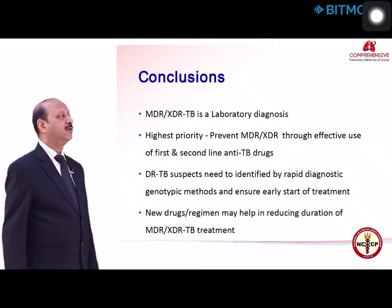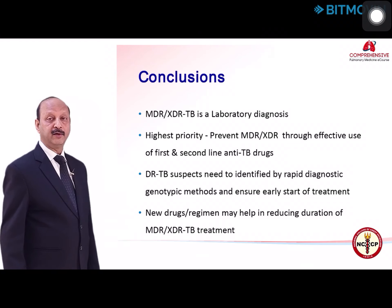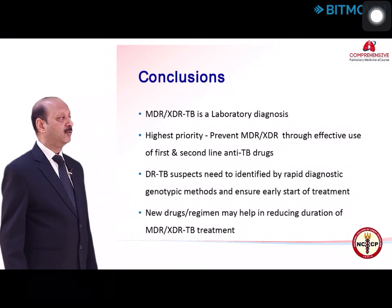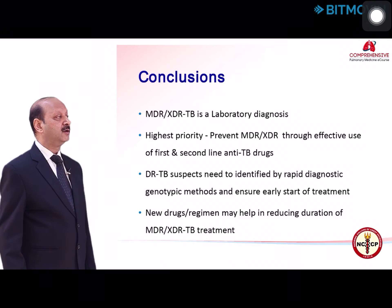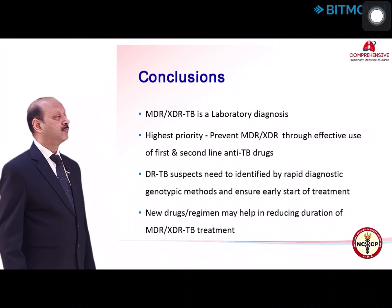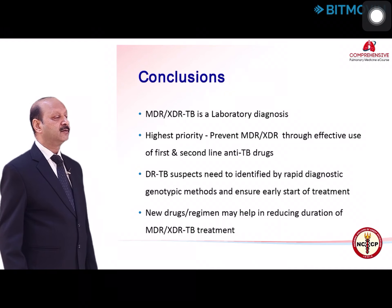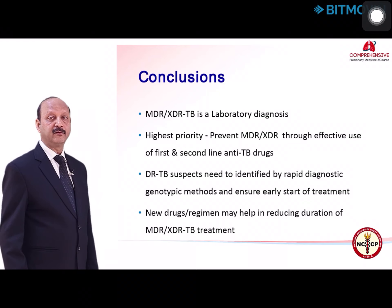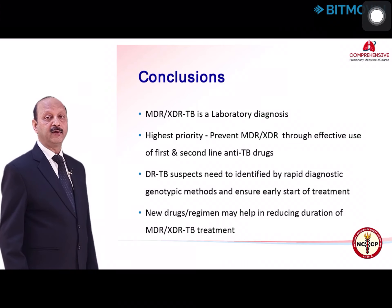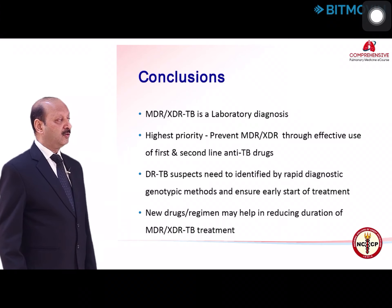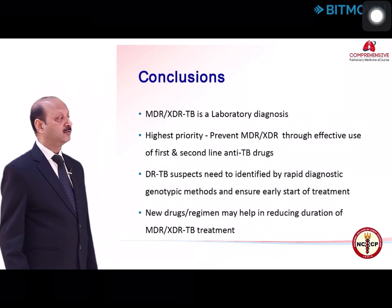To conclude: MDR and XDR tuberculosis is a laboratory diagnosis — we must never diagnose on clinical grounds alone and should make all efforts to confirm by laboratory. We should give the highest priority to preventing MDR and XDR tuberculosis by effective use of first-line and second-line TB drugs without misuse. Whenever MDR tuberculosis is suspected, use rapid diagnostic genotypic methods to start treatment early, and review the treatment regimen once liquid culture results are available. Global experience shows that new drugs and new regimens may help reduce the duration of MDR and XDR tuberculosis treatment.